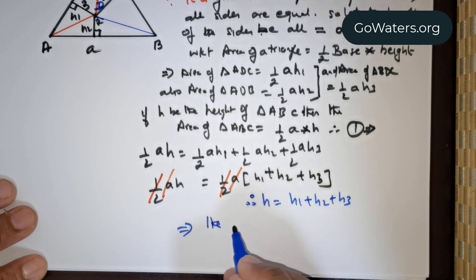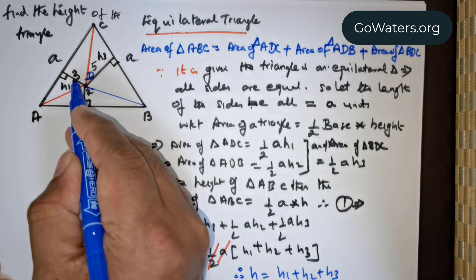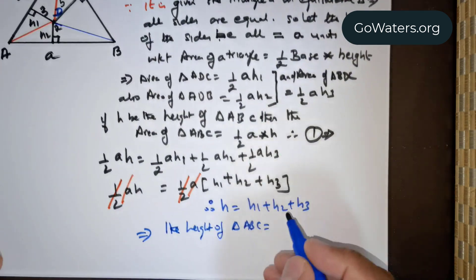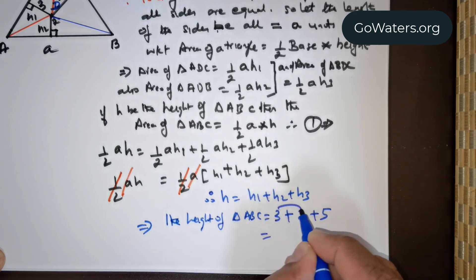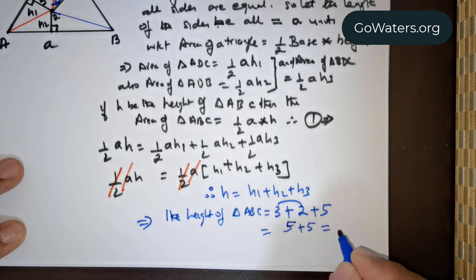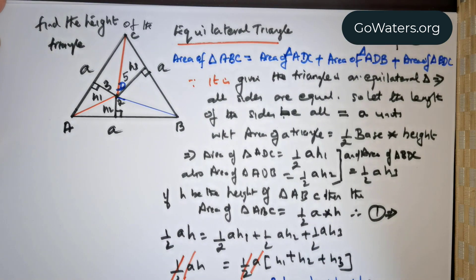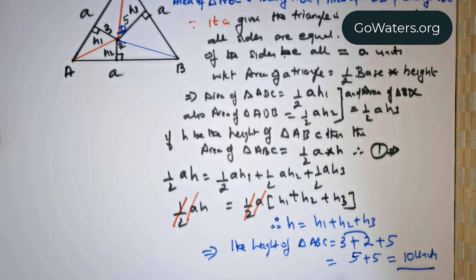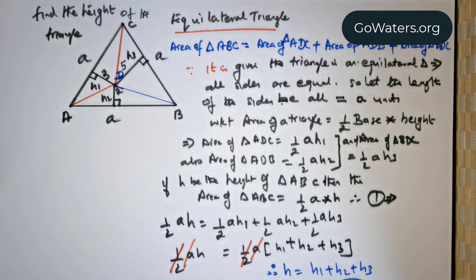This means the height of triangle ABC is equal to 3 plus 2 plus 5, which gives 10 units. That's the answer. It's a beautiful question and we have also seen the proof — how exactly we obtained the height of this equilateral triangle. Having mentioned that, we will move on to the next question.